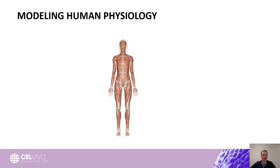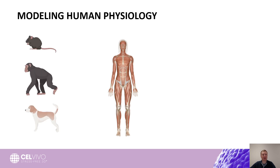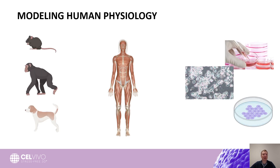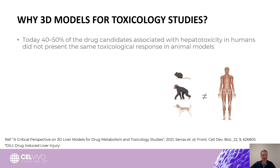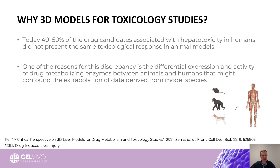To study human physiology we use different models, and we know that regardless of whether they are based on experimental animals or traditional cell culture, they present several limitations. For example, in toxicological studies, 40 to 50% of drug candidates associated with hepatotoxicity in humans did not present the same toxicological response in animal models. One reason for this discrepancy is the differential expression and activity of drug-metabolizing enzymes between animals and humans, which often makes extrapolation of data difficult.